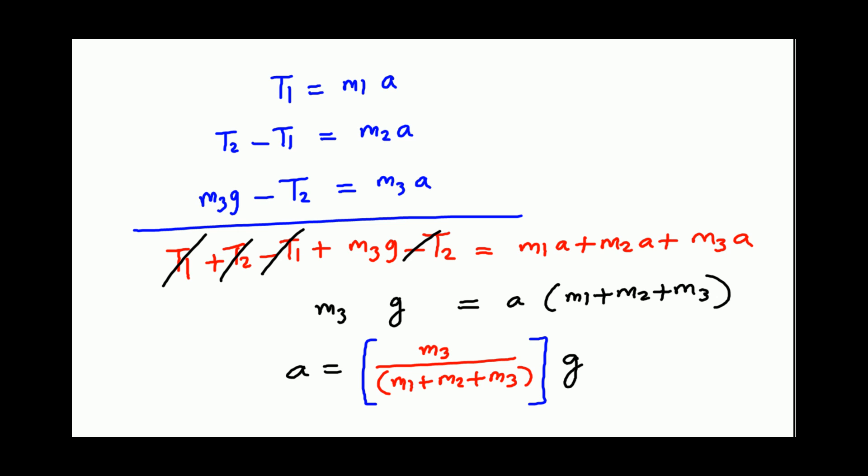And once you have acceleration, what do we do? Once we have acceleration, you go back to T1 equals M1a. As M1 is given, or assume M1 is given, and we now know what A is. So we know what is T1.